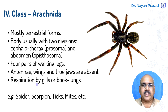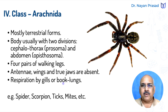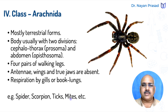Respiration takes place by gills or by book lungs. Book lungs are lung-like structures that are rectangular and folded like books — hence the name book lungs. Common examples are spider, scorpion, ticks, and mites.